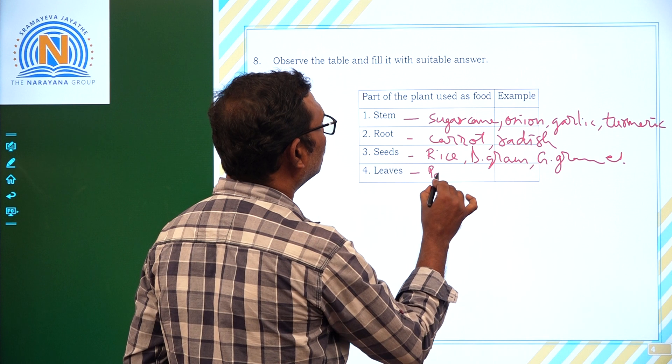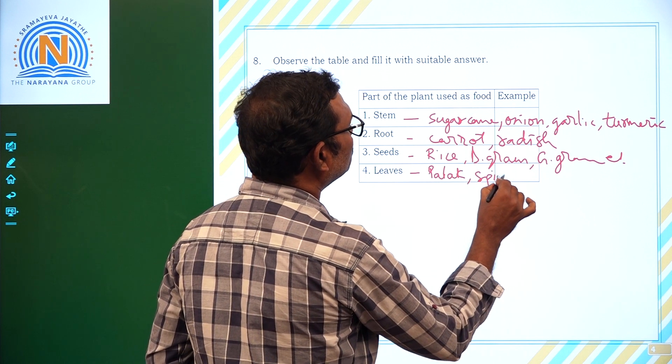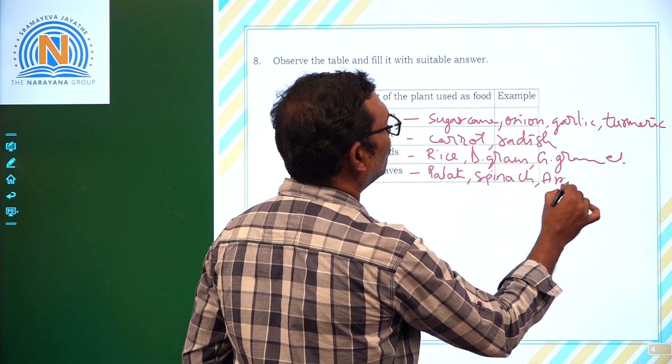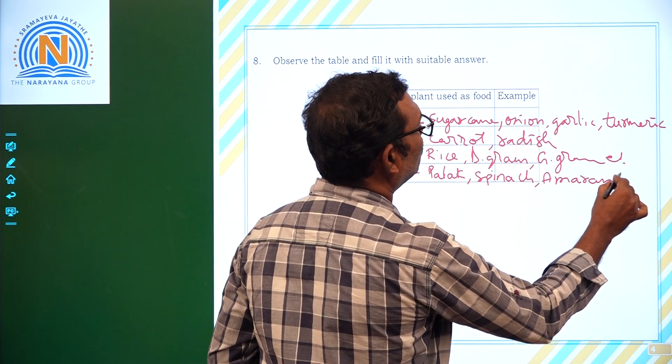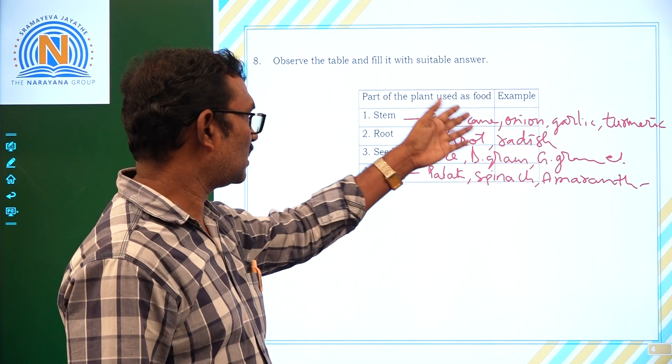And leaves, you know palak, spinach, amaranth, etc. So these are all different types of food materials, examples for food materials.